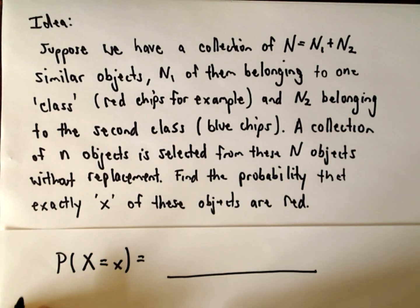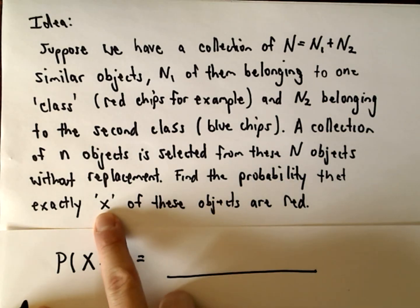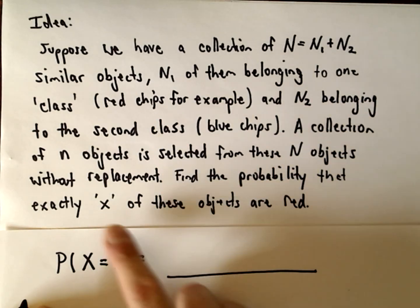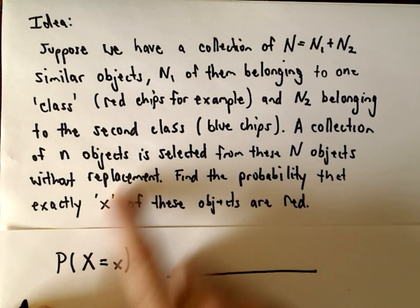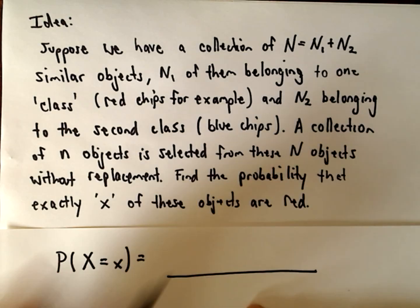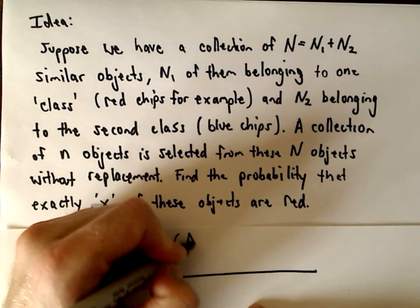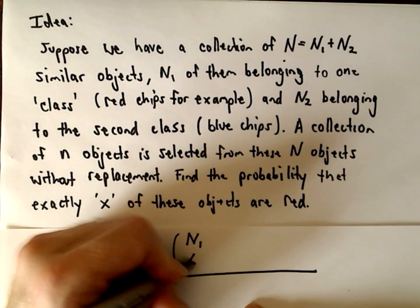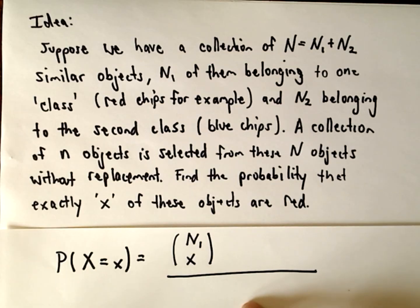Well to do this, we have to choose x objects from, excuse me, we want to select x of the red chips. How do we do that? Remember permutations and combinations? I've got n1 red chips total. I want to choose x of those to be red.